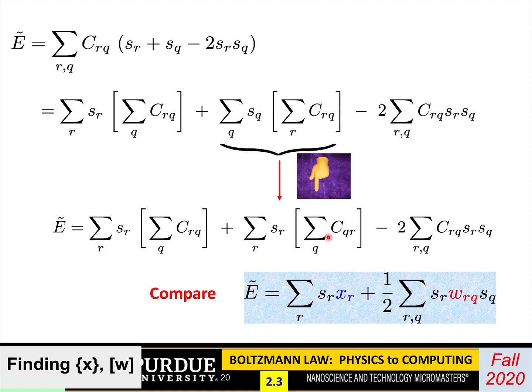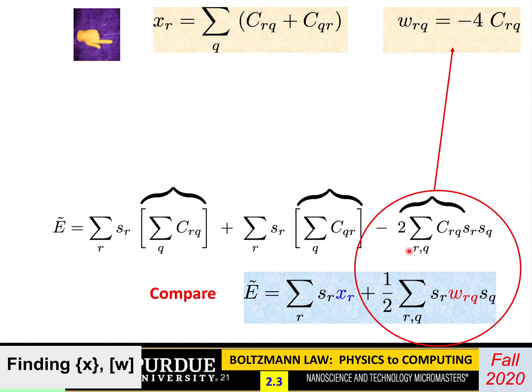So that way, this last line looks exactly like my canonical form. It's like summation SR times something, plus summation SR times something. So comparing the two, if I compare these weights, I can immediately get what W is. WRQ is equal to minus 4 times CRQ. Why the minus 4? There's a half here and there's a minus 2 there. What about XR? It's basically this summation and this. So XR is equal to sum over Q, CRQ plus CQR.